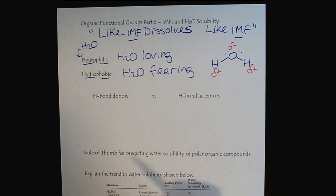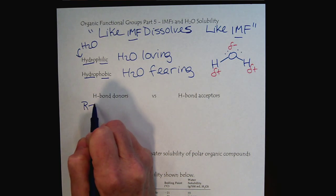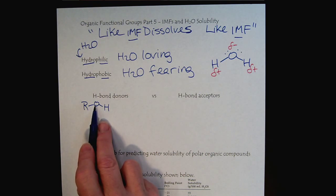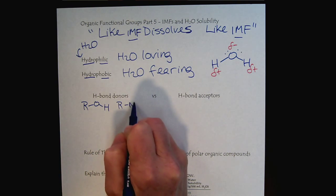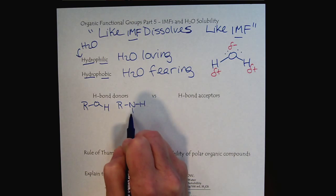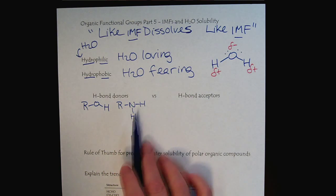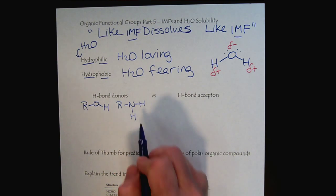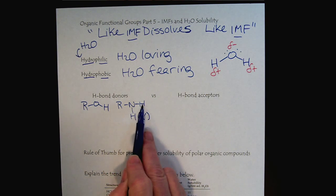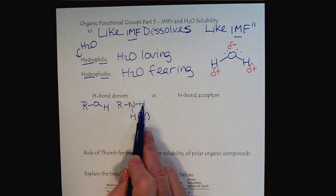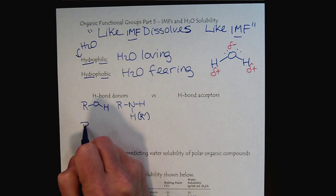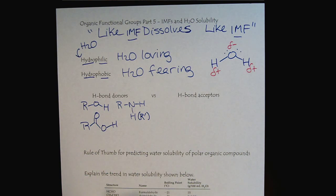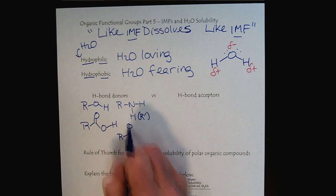Let's think about the groups we've learned. An alcohol can be an H-bond donor and acceptor, or amines — showing a primary amine here, where we can substitute at least one of the hydrogens for another R group and still have an H-bond donor. Then we have carboxylic acids, also H-bond donors, and even amines to a lesser degree.